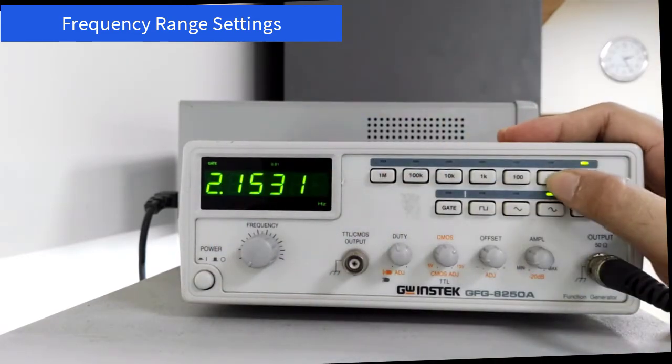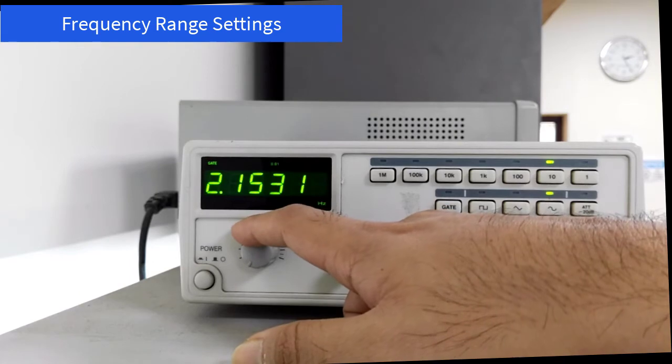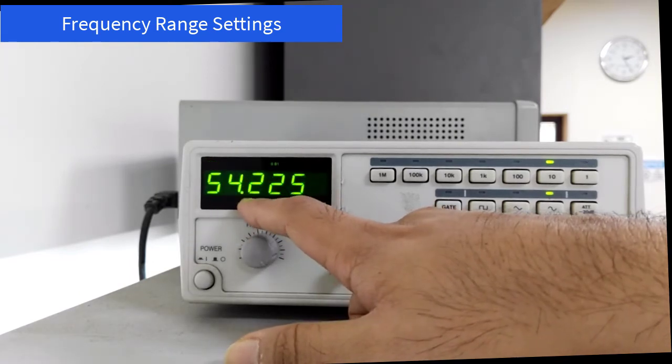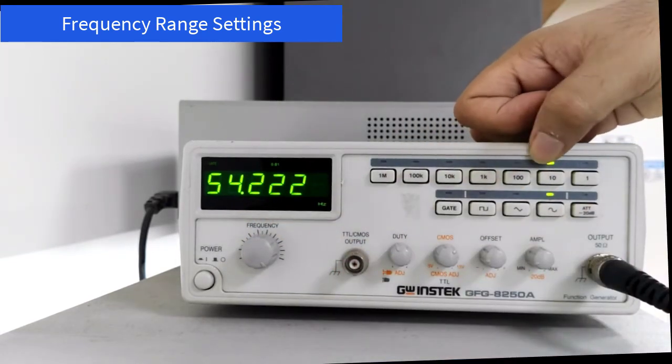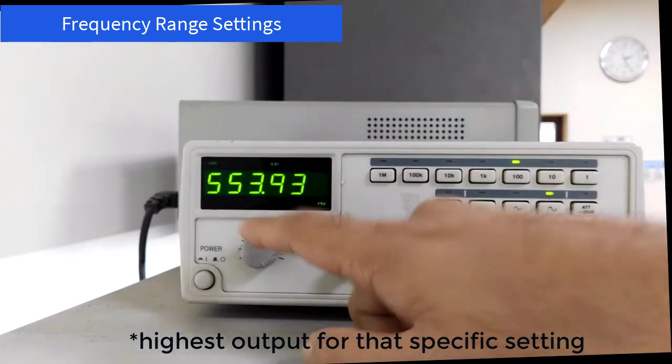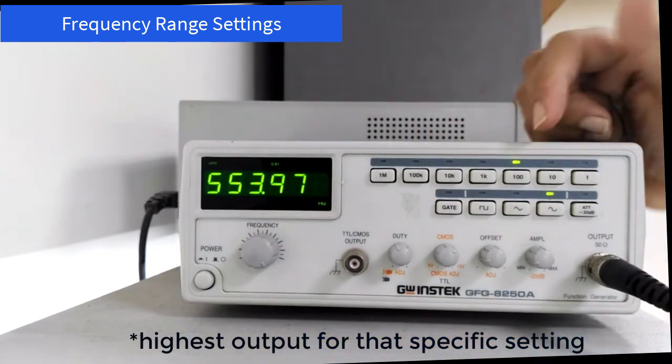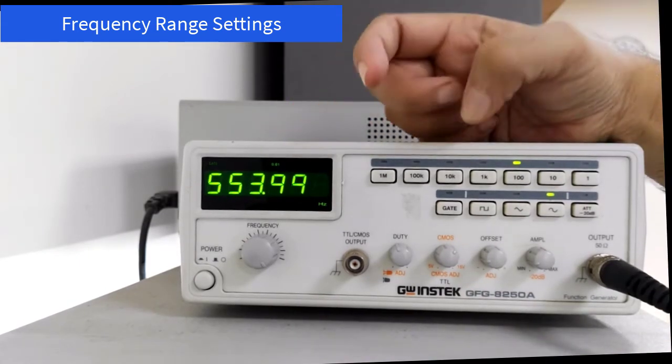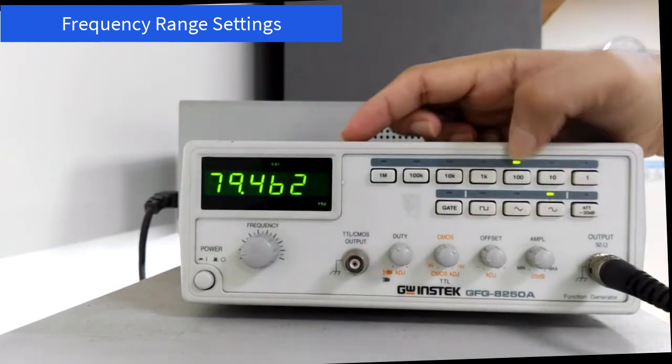When you press this 10 hertz button, then you will see that the frequency generator supplies from around 2 hertz to around 54 hertz. As you keep on increasing the range, the highest output provided by this function generator increases. When 100 is pressed, you will get a highest output of 553 hertz.